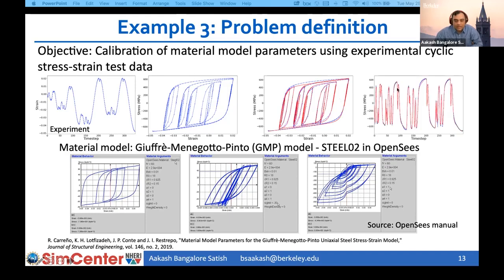The material model used is the GMP model, known as Steel02 in OpenSees. Steel02 can represent a wide range of behaviors depending on the chosen parameters. Our objective is to calibrate the parameters of this material model to get a good match between model predictions and experimental data. The response quantity is the stress time history — blue points show the data and red is the model prediction, plotted at the posterior mean obtained from Bayesian calibration.